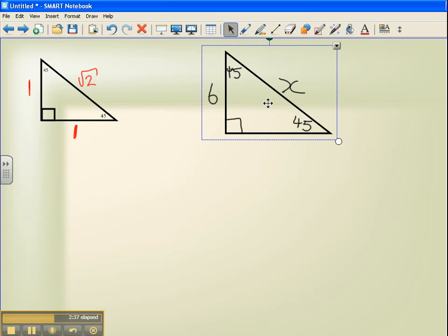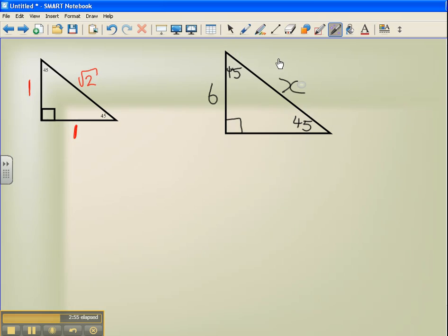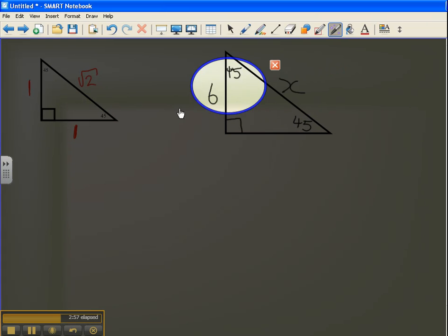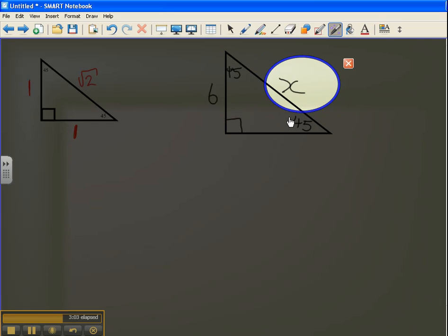What is the length of our hypotenuse or the value that's x? So just like we did on the 30-60-90 triangle, we're going to use ratios. We know that 6 and x will always be the same ratio to each other. So let's start writing. x is going to be the same side as root 2 because they're both hypotenuses. So x and root 2.